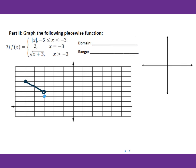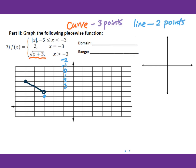Now go to the third piece: f(x) equals square root of x plus 3, for x greater than negative 3. Since x greater than negative 3, use values greater than negative 3 — negative 2, negative 1, 0, 1, 2, 3, and so on. When sketching a curve, normally three points are enough. Two points determine a straight line for a linear function, but for a curve use at least three.